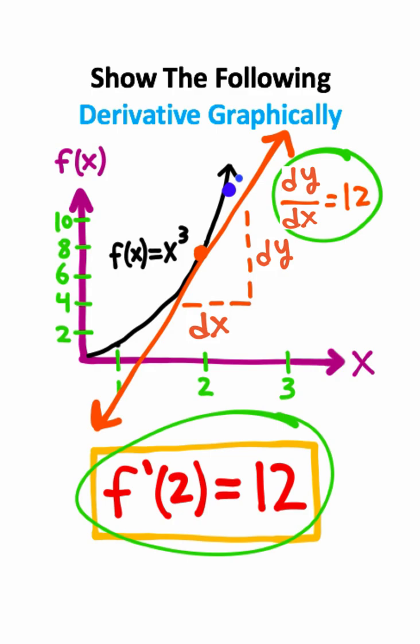Notice the derivative would be larger if we drew a tangent line at this point because we have a steeper line. Likewise, the derivative would be smaller at a point close to the origin.